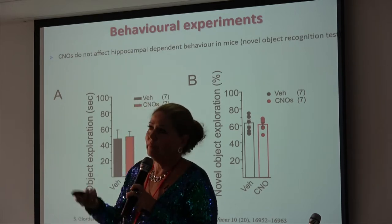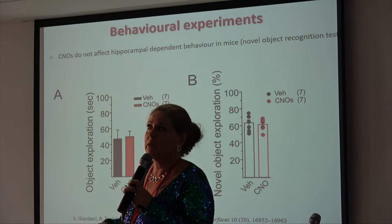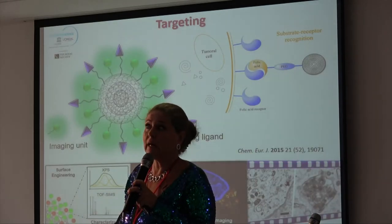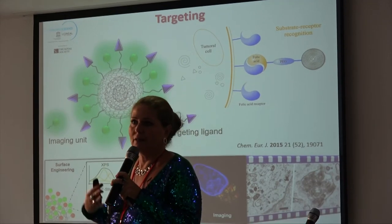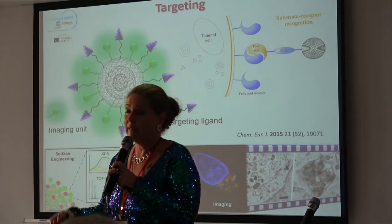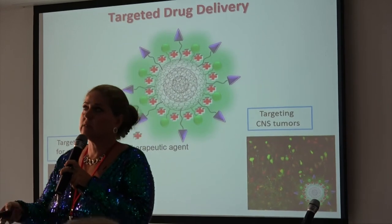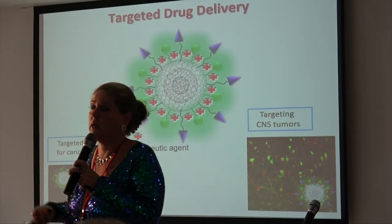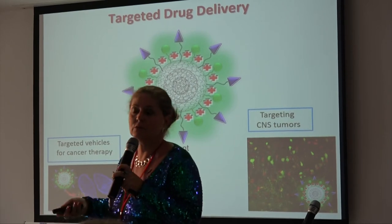With these promising preliminary results, we are working on targeting — making sure that we can actually target our nano onions. We want to target cancer cells and in future target central nervous system tumours.